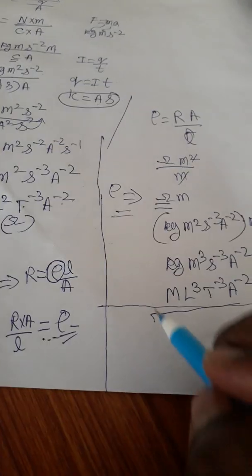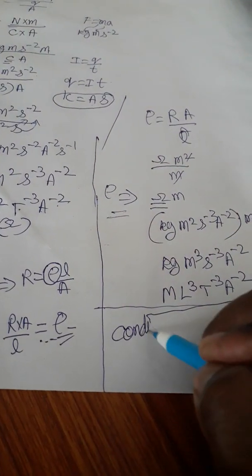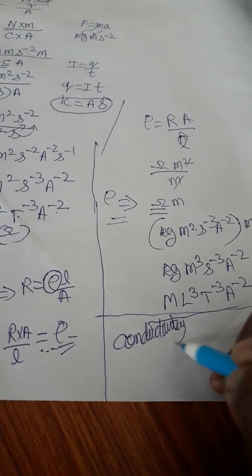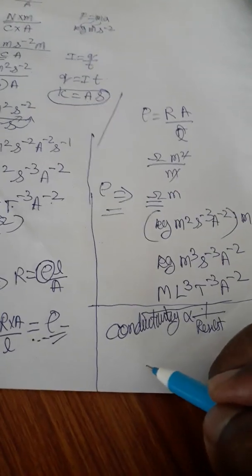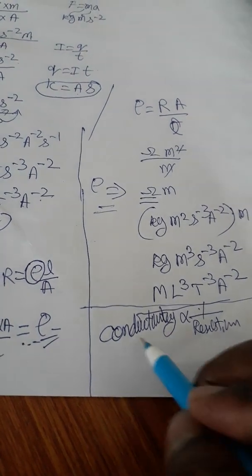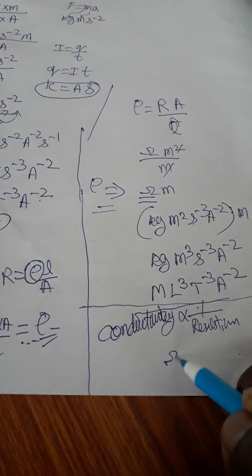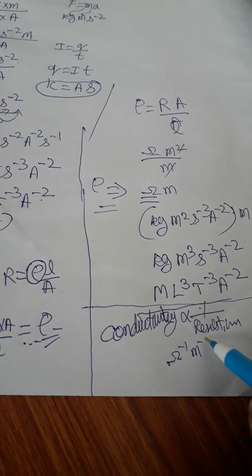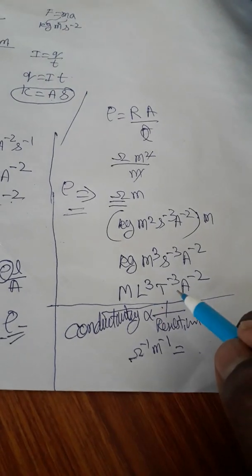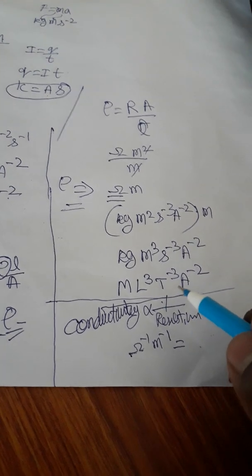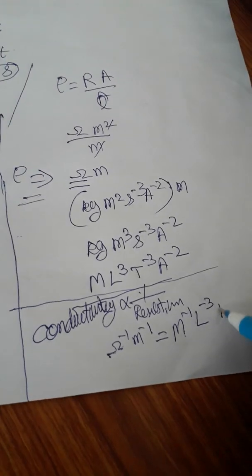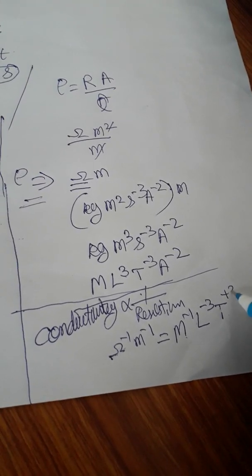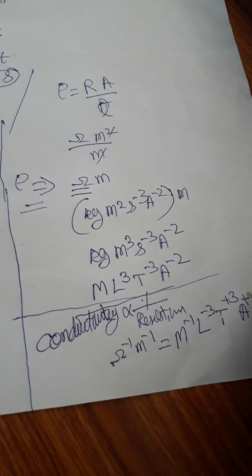The same logic applies to conductivity. Conductivity is inversely proportional to resistivity. Resistivity we already know is ohm·meter, so conductivity is ohm⁻¹·meter⁻¹. Whatever dimensional formula we got for resistivity, its inverse gives conductivity: M⁻¹L⁻³T³A².